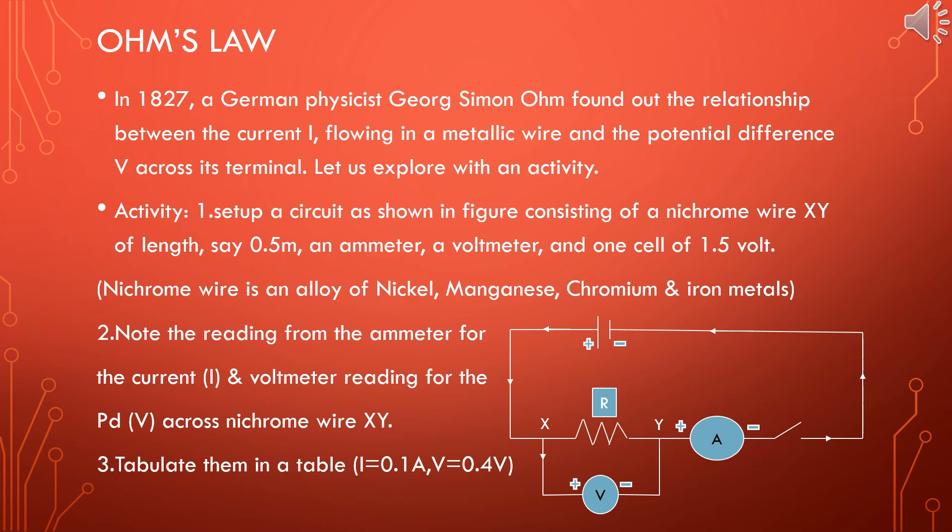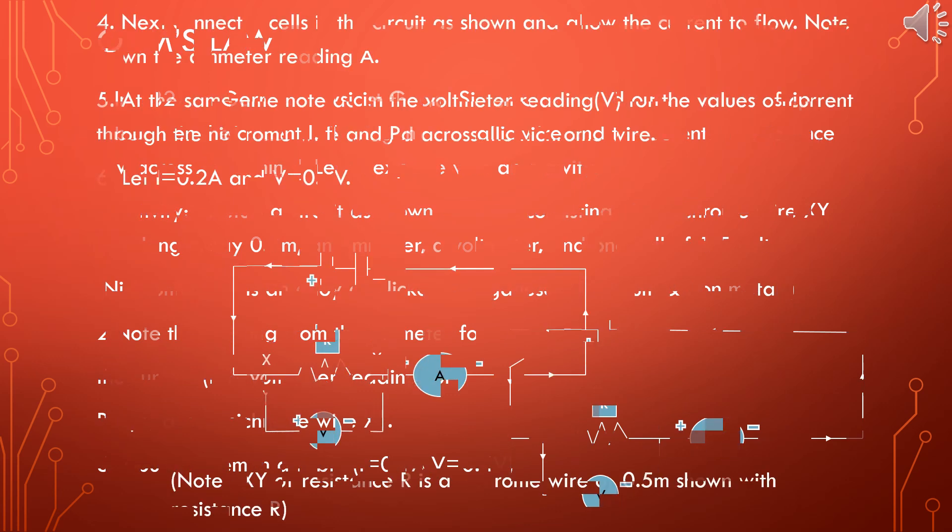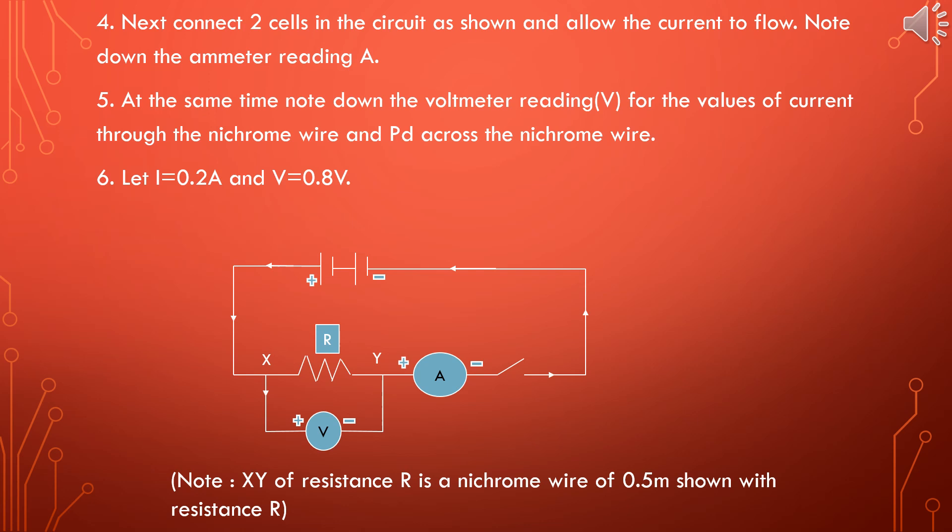When you switch on, you will get readings on the ammeter and voltmeter. Note the ammeter reading as well as voltmeter reading in a table given in the next slide. Let us assume ammeter reading as 0.1 amp and voltmeter reading as 0.4 volts. Now observe the circuit diagram where I have connected two cells. Let us consider the ammeter reading as 0.2 amp and voltmeter reading as 0.8 volts.